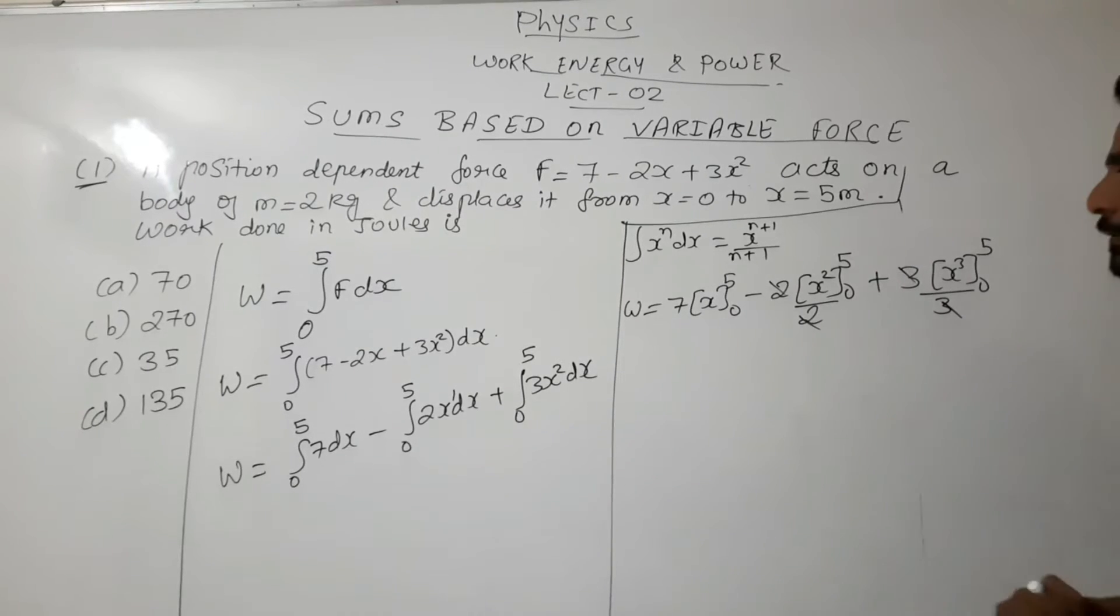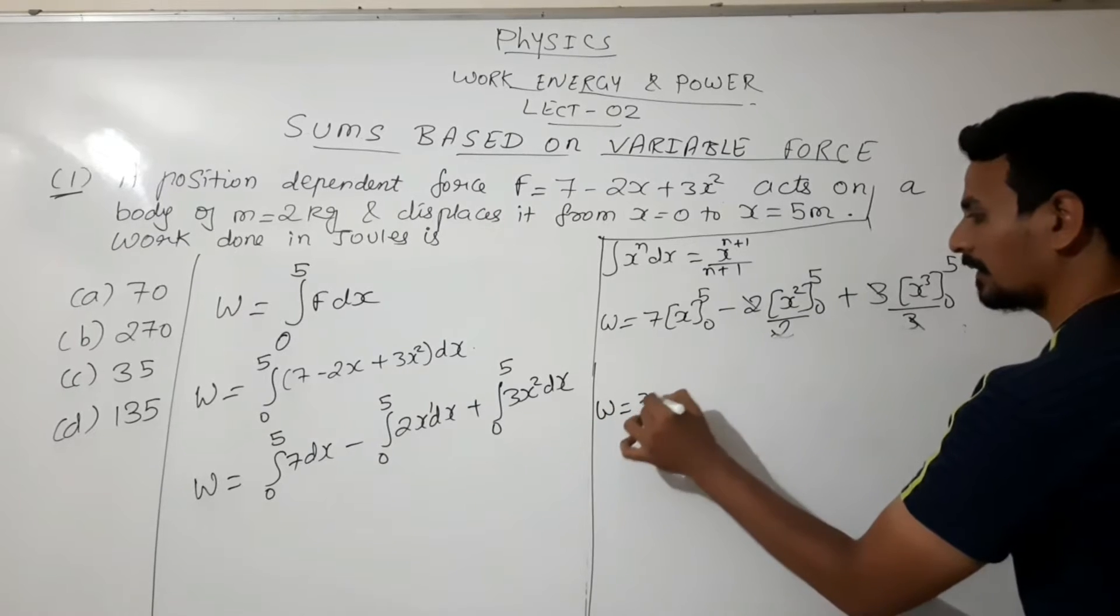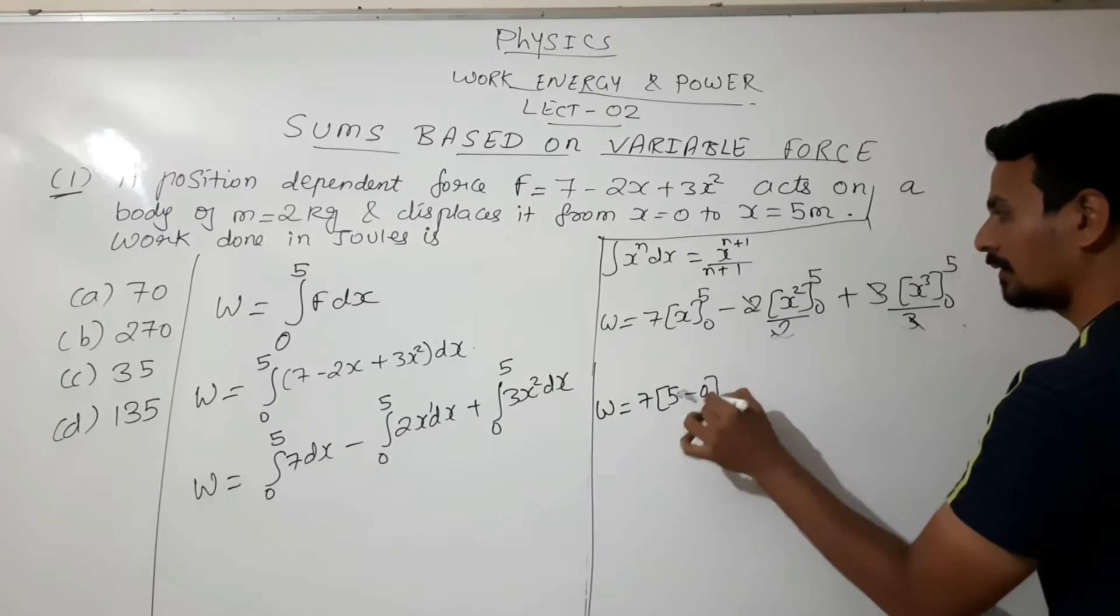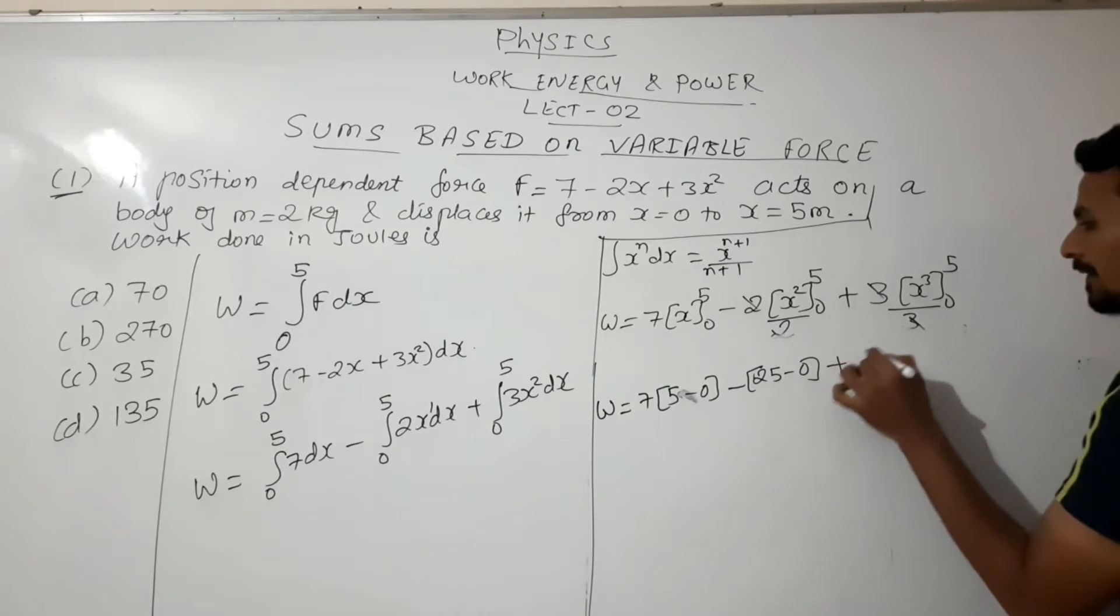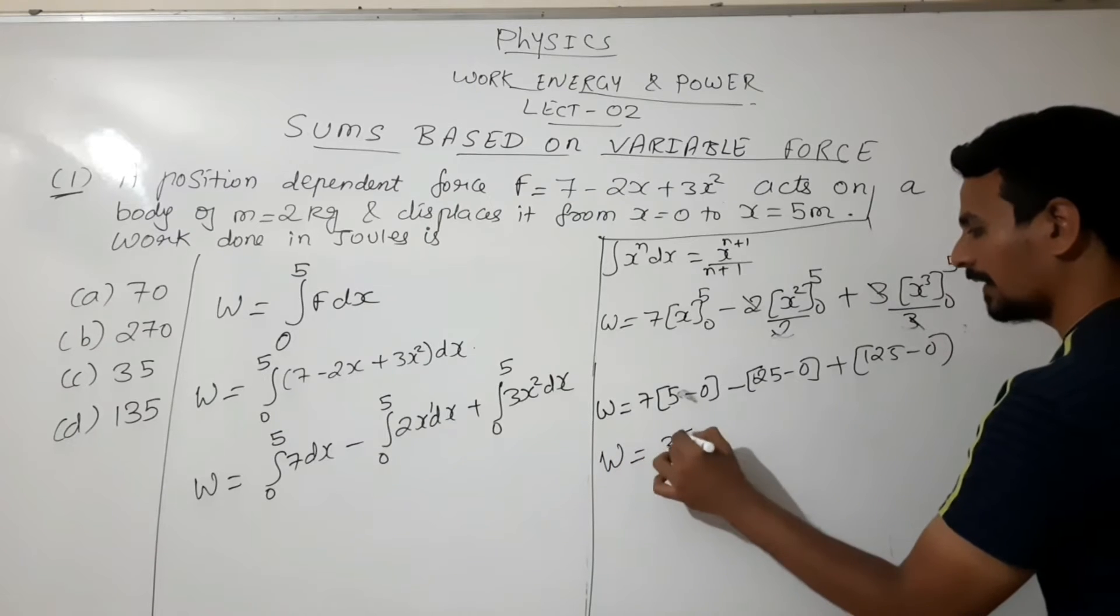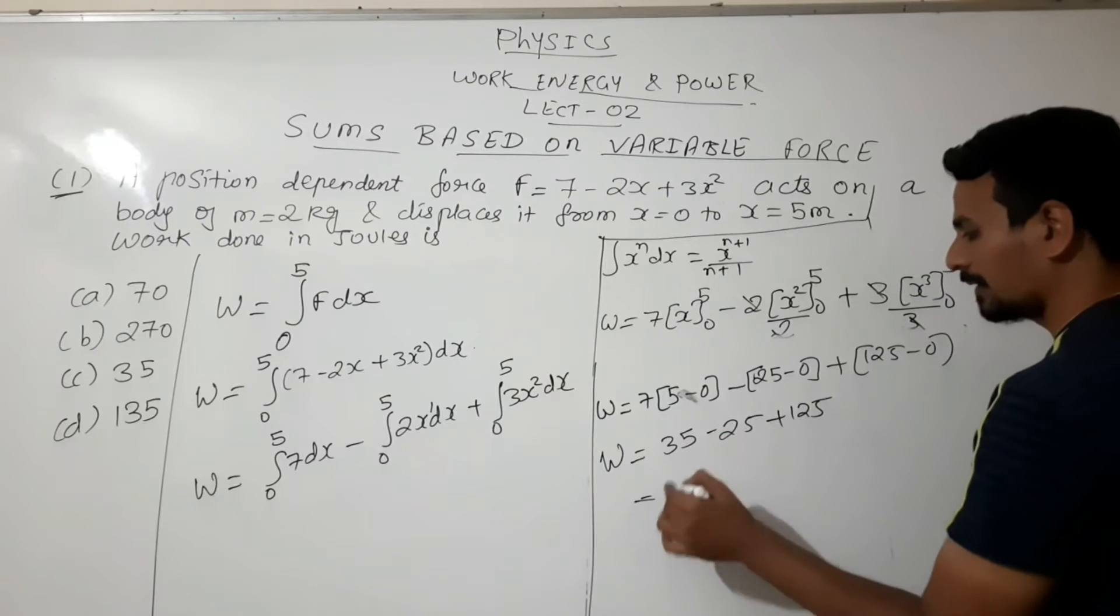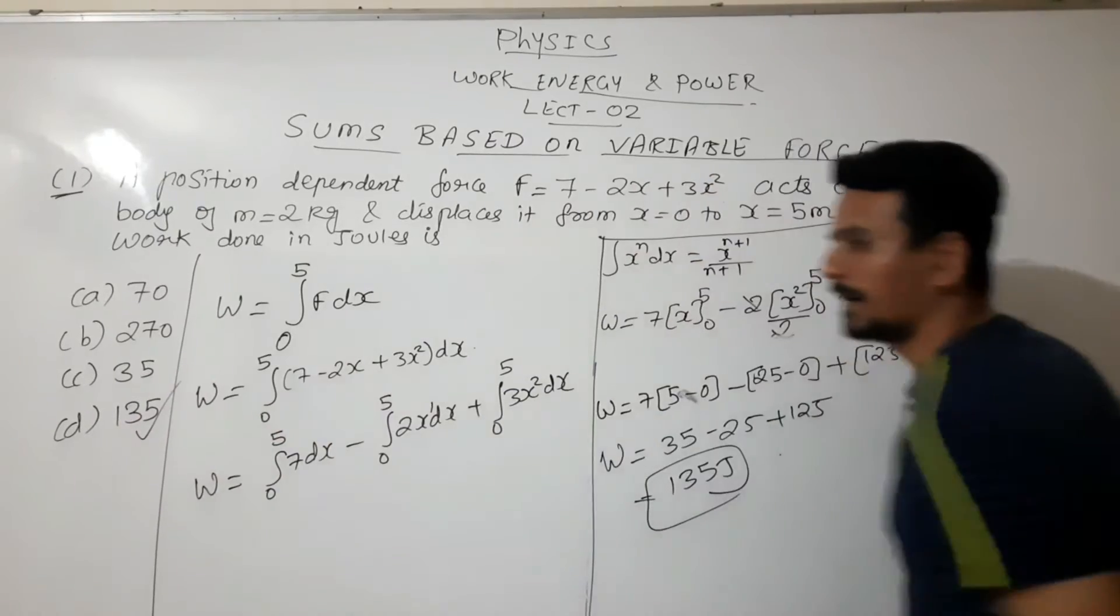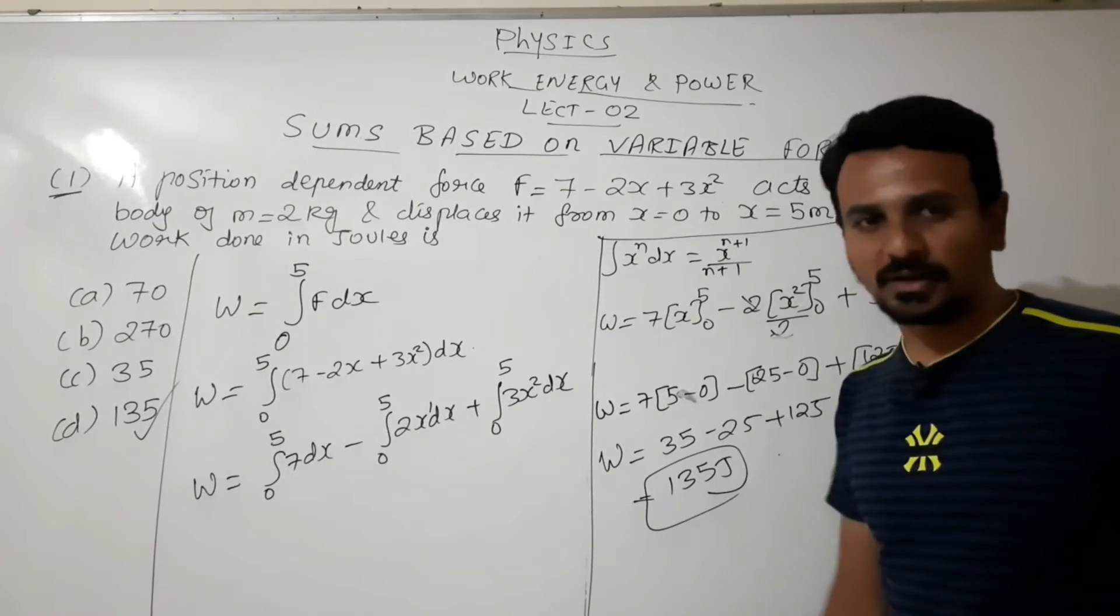Now let us substitute and apply the limits. Work done: 7(5 - 0) minus 2(25 - 0) plus 125 - 0. So it is 35 - 25 + 125, which will be 135 joule. This will be your answer. This is how we will solve the questions based on variable forces. Now let us go for another question.